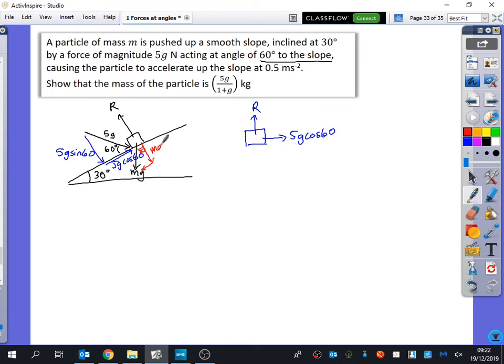This would be my MG cos 30 and my MG sine 30 because this is opposite the 30 degrees. Adding those in, I have my MG cos 30 and I also have my 5G sine 60. And then to the left here, I've got my MG sine 30. I'm not really bothered about these up and down ones because it's not asking me to do anything about the normal reaction. It's just asking us something about the acceleration.